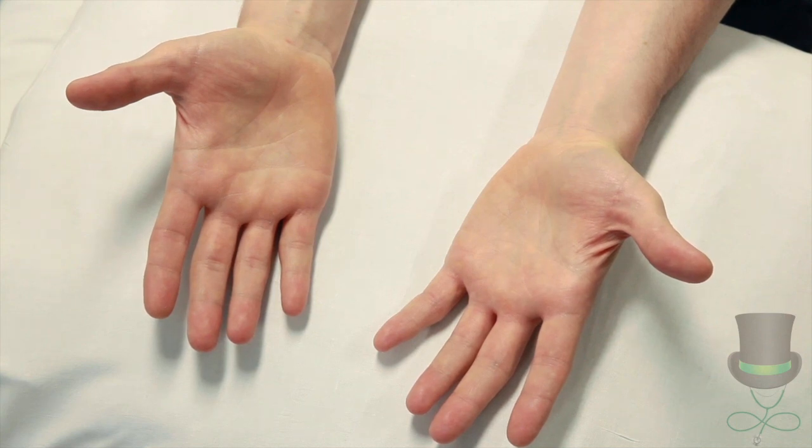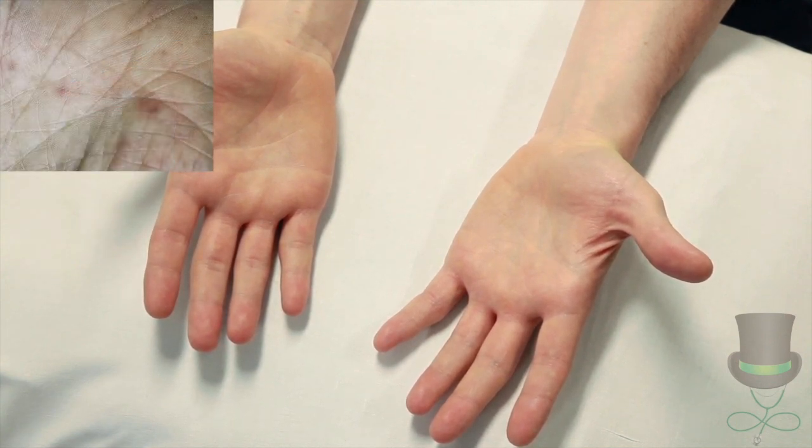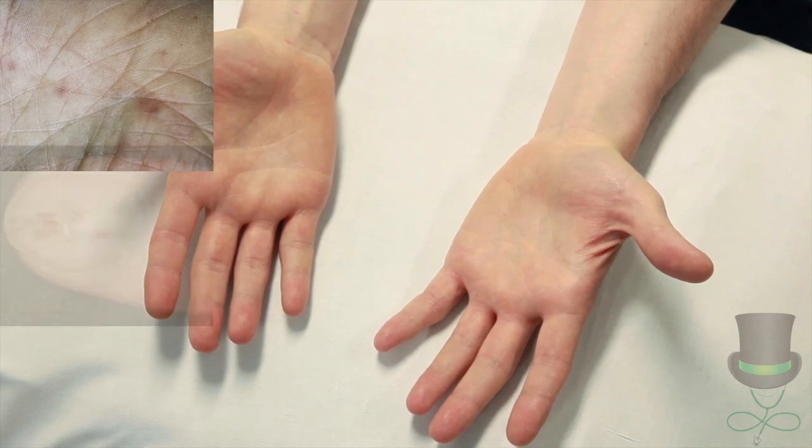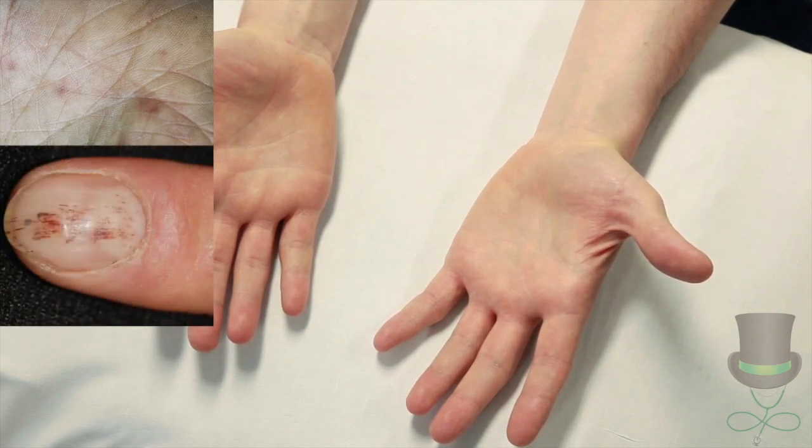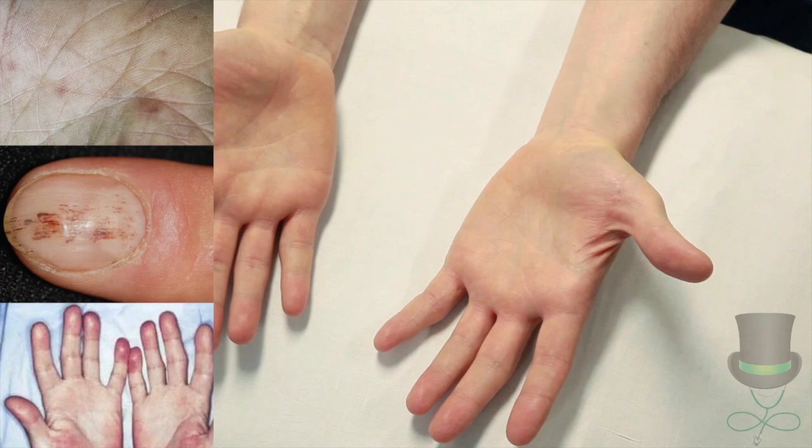If present, endocarditis will manifest as painless dark Janeway lesions on the palms or pulps of the fingers, splinter hemorrhages in the nails, or painful red Osler nodes over the finger pulps, thenar or hypothenar eminences.